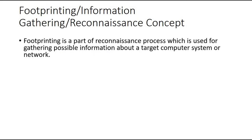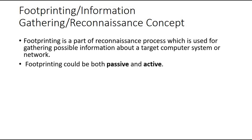So the first topic is Footprinting — what exactly is Footprinting, or Reconnaissance, or Information Gathering. It is a process used to gather as much information as possible about any target: a computer system, network, or organization. It is of two types — you can do it by passive or active method.